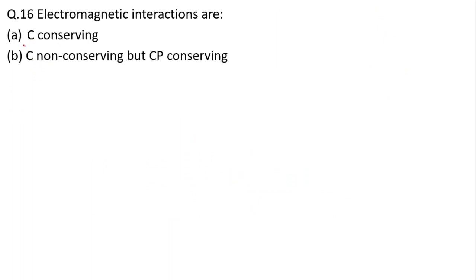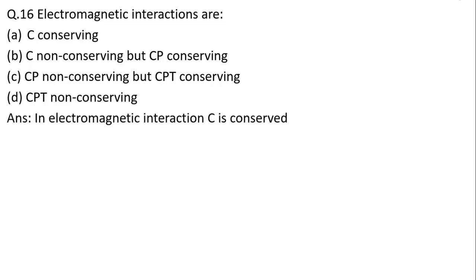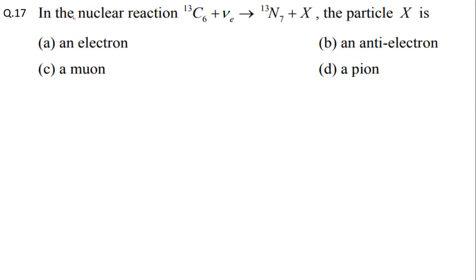Question 16: Electromagnetic interactions are — C conserving; C non-conserving but CP conserving; CP non-conserving but CPT conserving; CPT non-conserving. Here C = charge conjugation, P = parity, T = time. In electromagnetic interaction, C is conserved. In all interactions, CPT is conserved. In electromagnetic and strong interactions, CP is conserved. So for electromagnetic interaction, C is conserved — option A is correct.